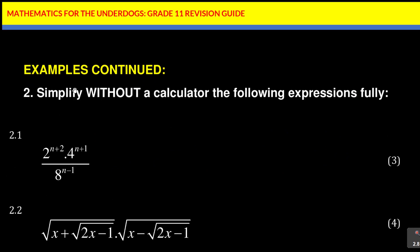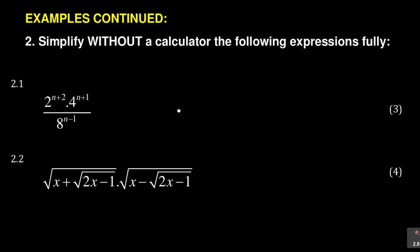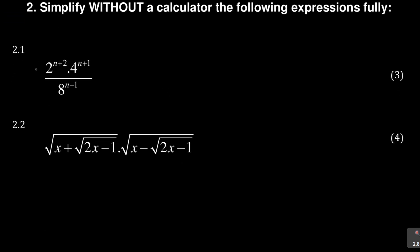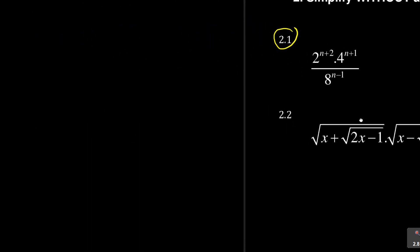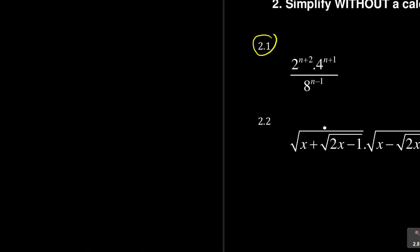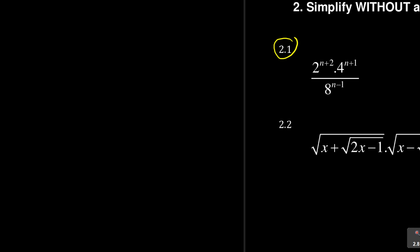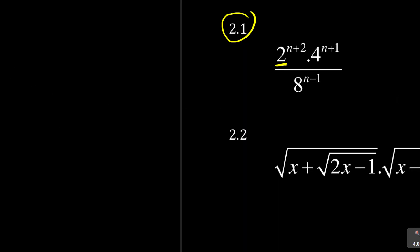It says examples continued: simplify without a calculator the following expressions fully. I asked you to do 2.1 — let's compare our answers. If you've done it, what did you get? Now 2.1 is 3 marks. The key word is: express everything in terms of the same base. Look at this — what is the base? You've got 2. What is the base here? It's 4 and 8.